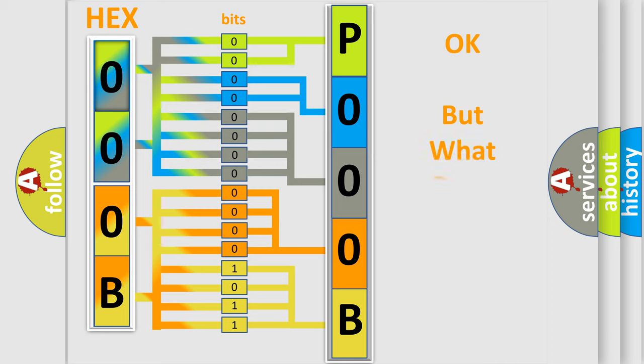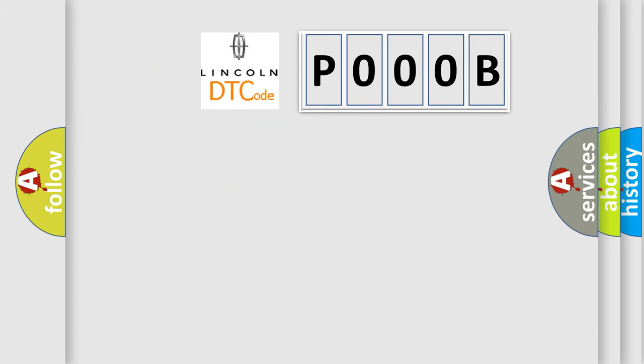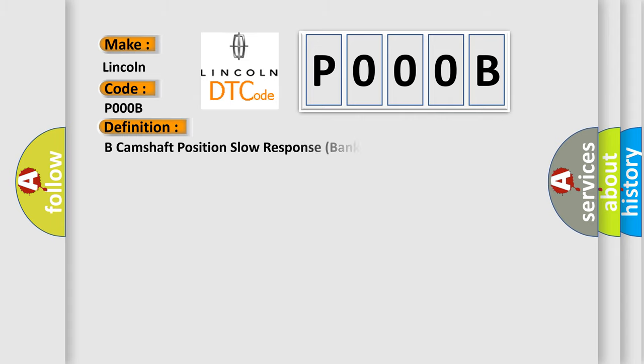The number itself does not make sense to us if we cannot assign information about what it actually expresses. So, what does the diagnostic trouble code P000B interpret specifically for Lincoln car manufacturers? The basic definition is: B camshaft position slow response bank 1.